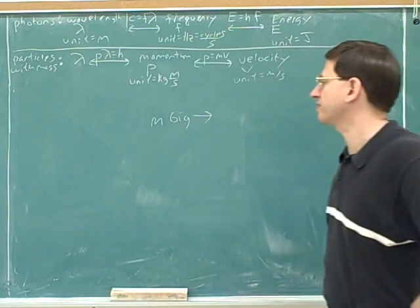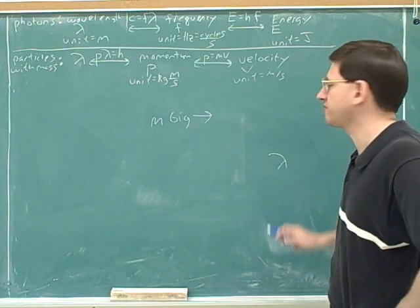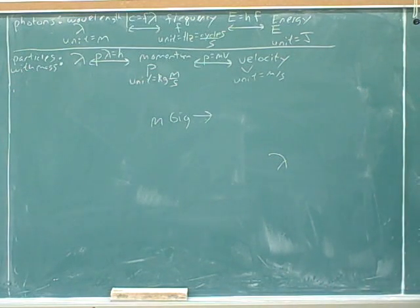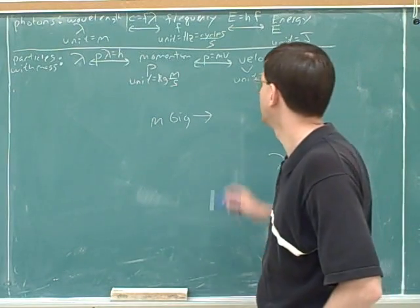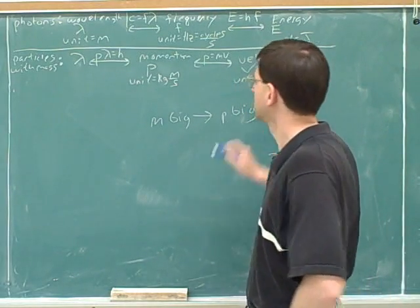So let's think about why we don't normally notice that things have wavelengths. For example, this chalk holder has wave characteristics and has a wavelength, but it doesn't seem like a wave at all. Well, why is that? Let's say that something has a big mass. Let's try to work out step by step. If it has a big mass, what's the effect of that on its wavelength? So it has big mass, big momentum, and then?